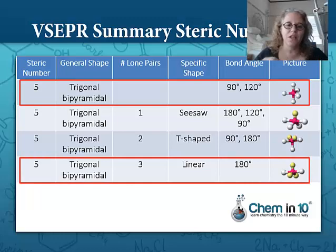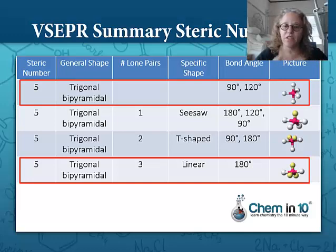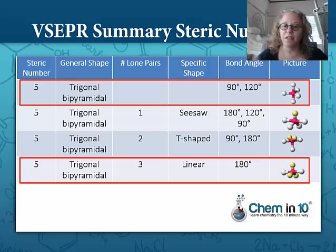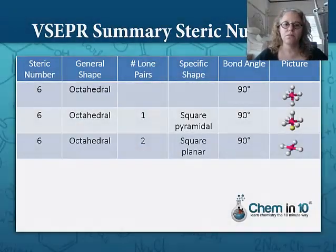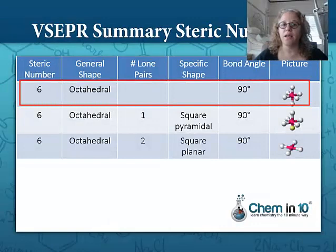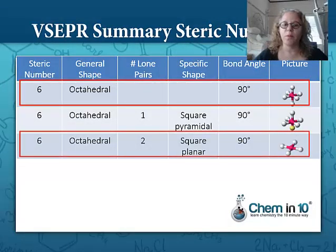There are some exceptions. Generally it's the shape without the lone pairs that is symmetrical and cancels out, but there are some symmetrical shapes with lone pairs. If you have a steric number of five but you have three lone pairs, you end up with a linear shape. And as we saw with carbon dioxide, a linear shape cancels the dipole moments out, as long as the two atoms attached to the central atom are identical. The octahedral shape is also a symmetrical shape, as is the square planar, which is what a steric number of six would form if it had two lone pairs.